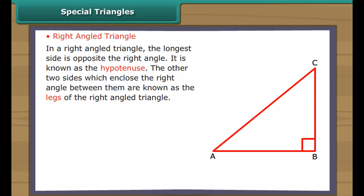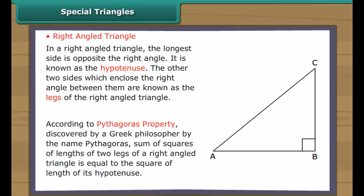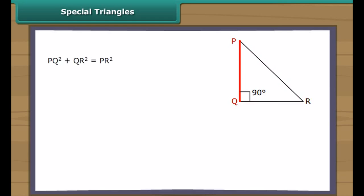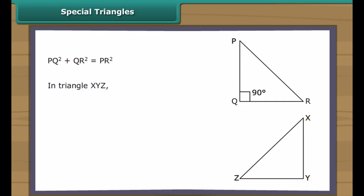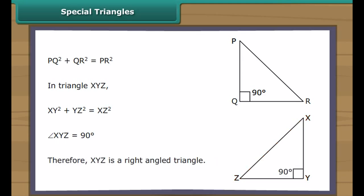In a right-angled triangle, the longest side is opposite the right angle; it is known as the hypotenuse. The two sides which enclose the right angle are known as the legs. According to the Pythagoras property, discovered by Greek philosopher Pythagoras, the sum of the squares of the lengths of the two legs is equal to the square of the hypotenuse. In right-angled triangle PQR: PQ² + QR² = PR². In triangle XYZ, if XY² + YZ² = XZ², then angle XYZ = 90 degrees, and XYZ is a right-angled triangle.